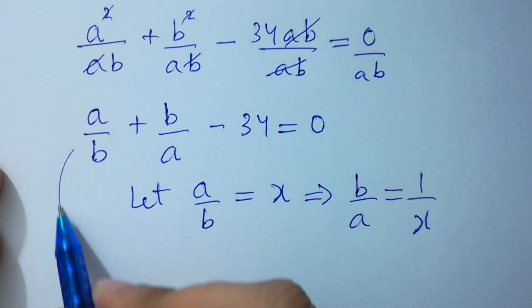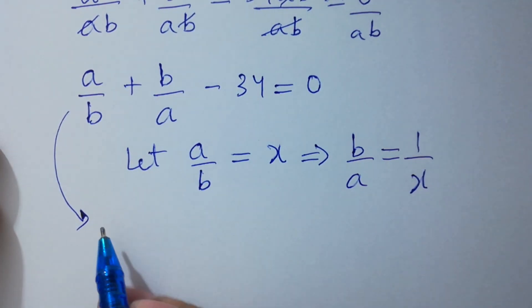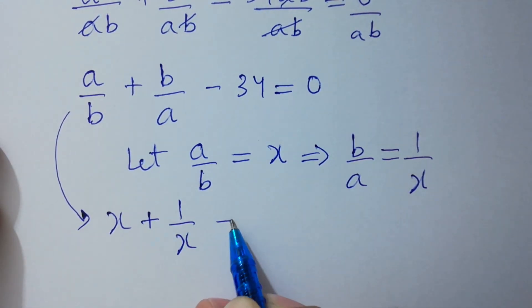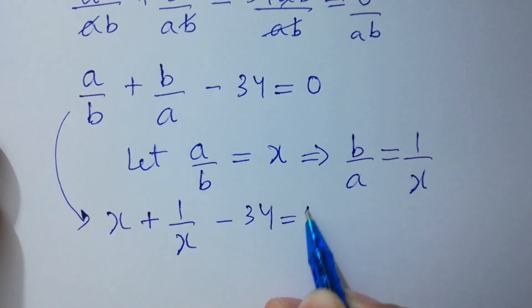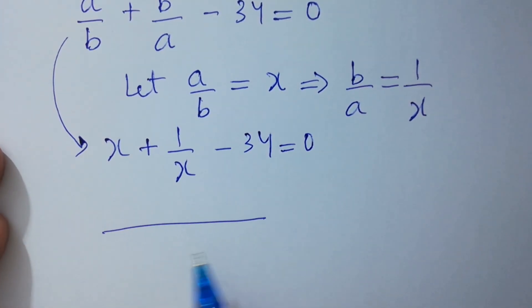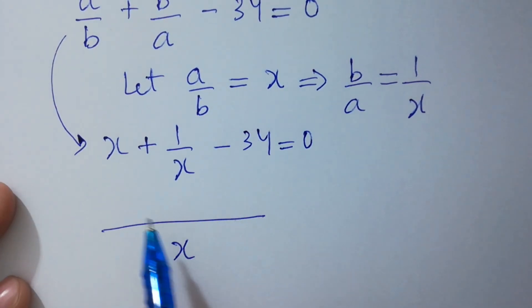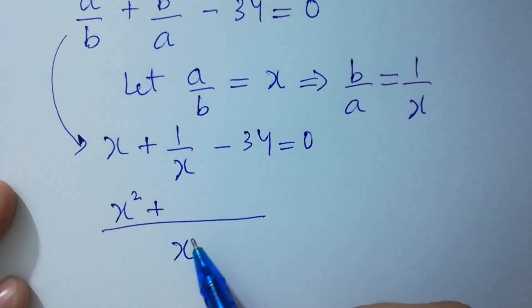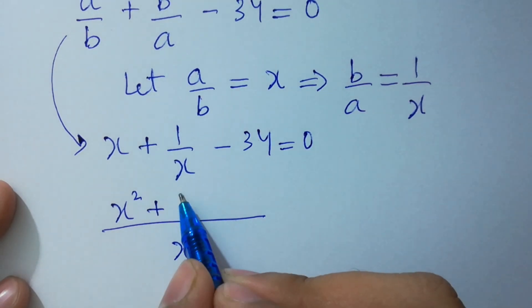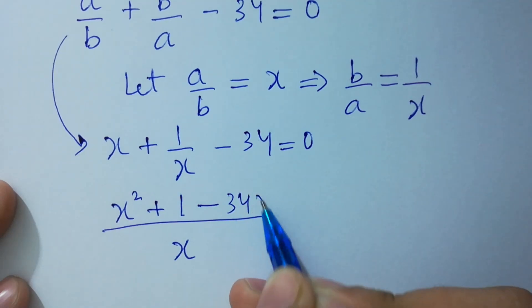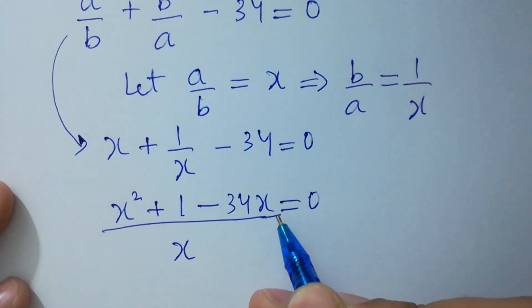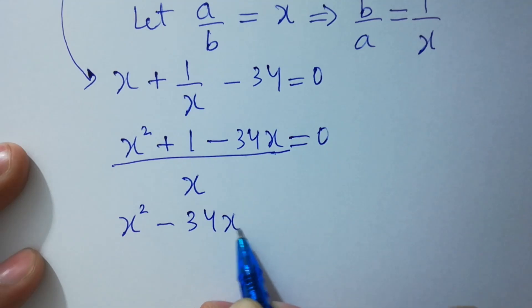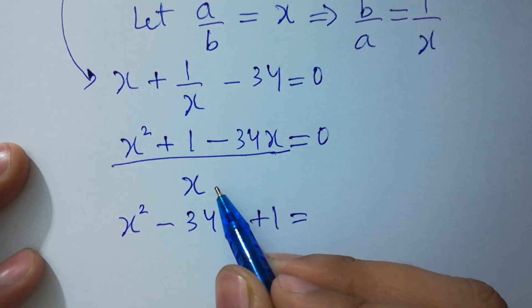Put the values in: x plus 1 over x minus 34 equals 0. Now take the LCM. We have x times x giving x squared, plus x times 1, and 1 times 1, minus 34 equal to 0. So x squared minus 34x plus 1 equal to 0.